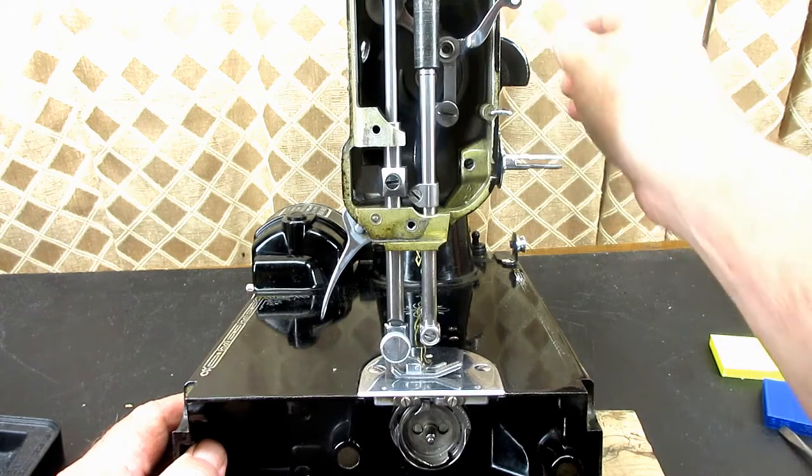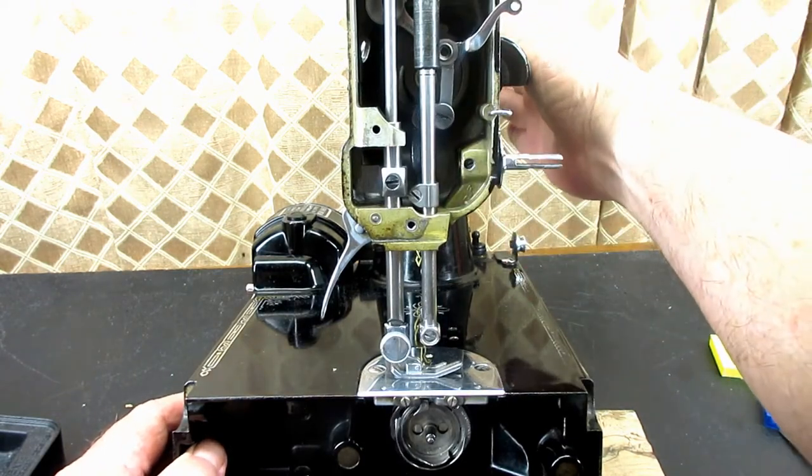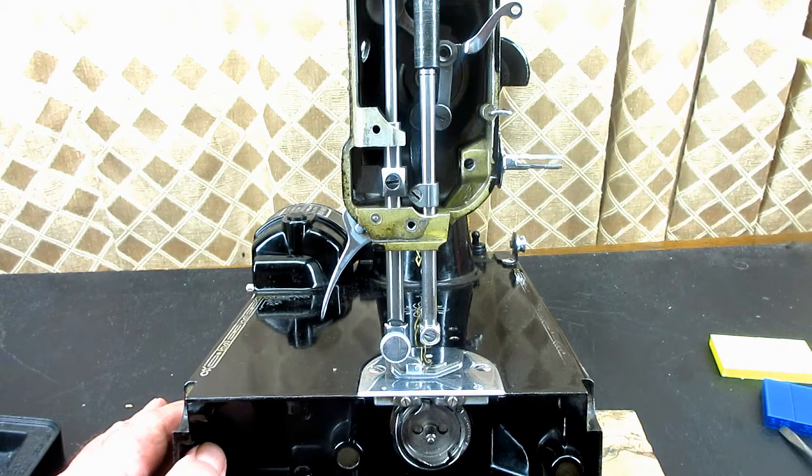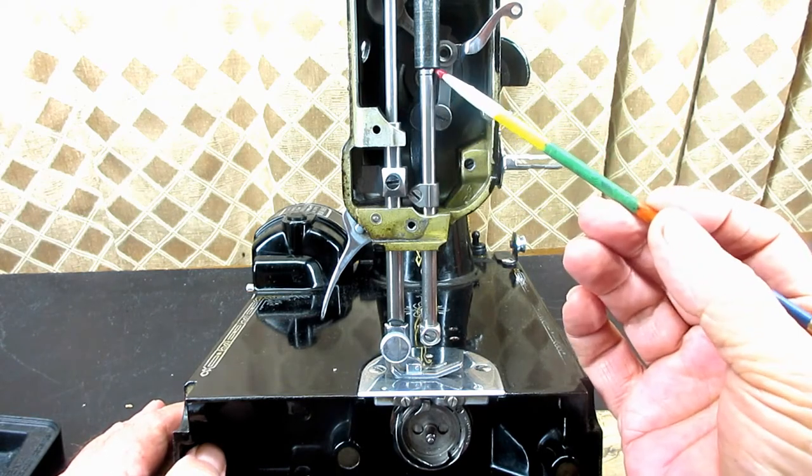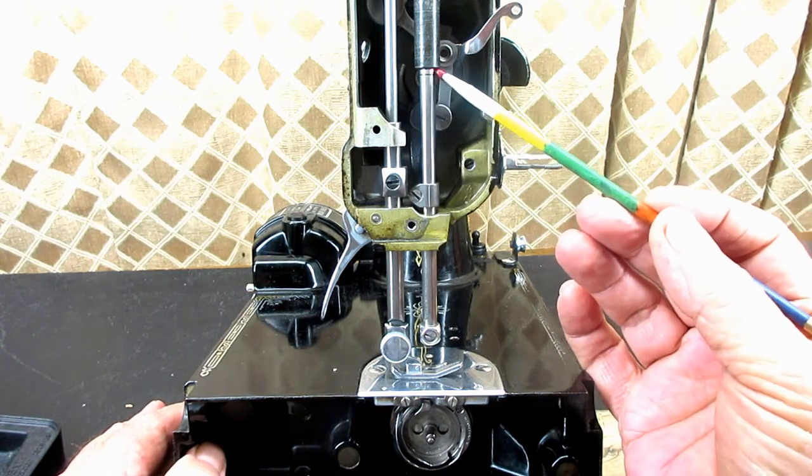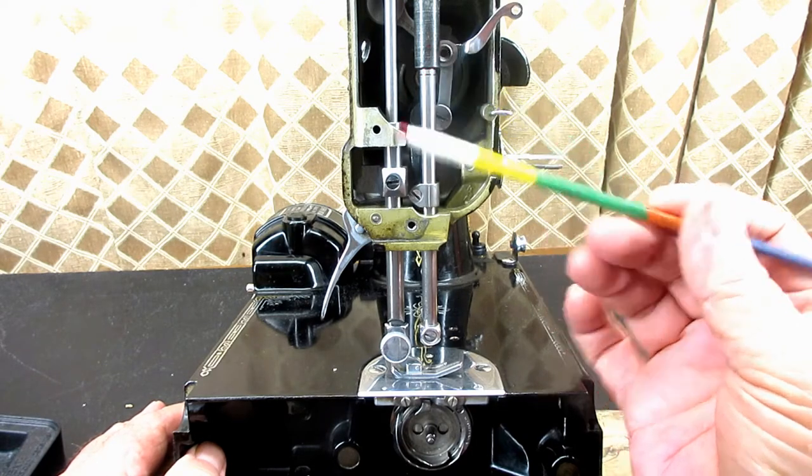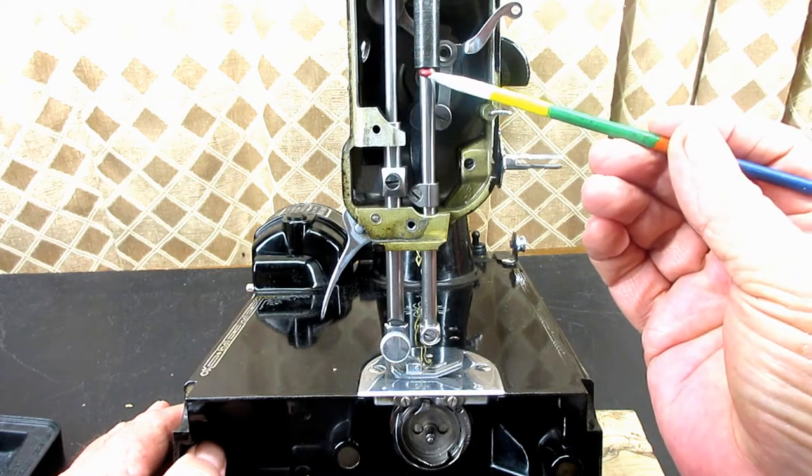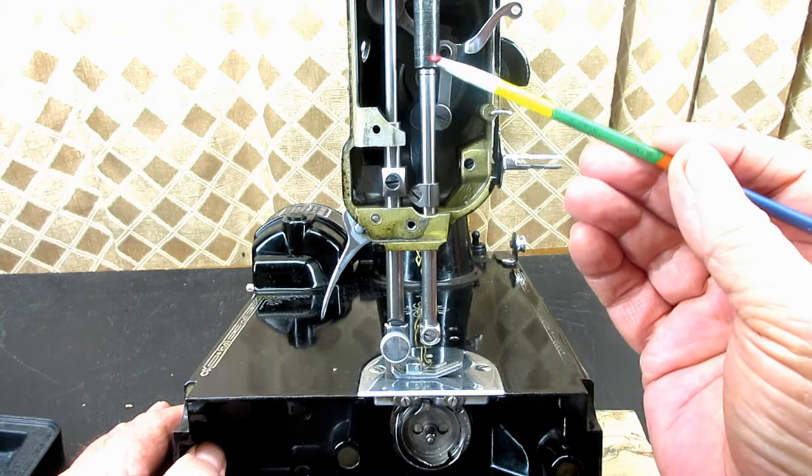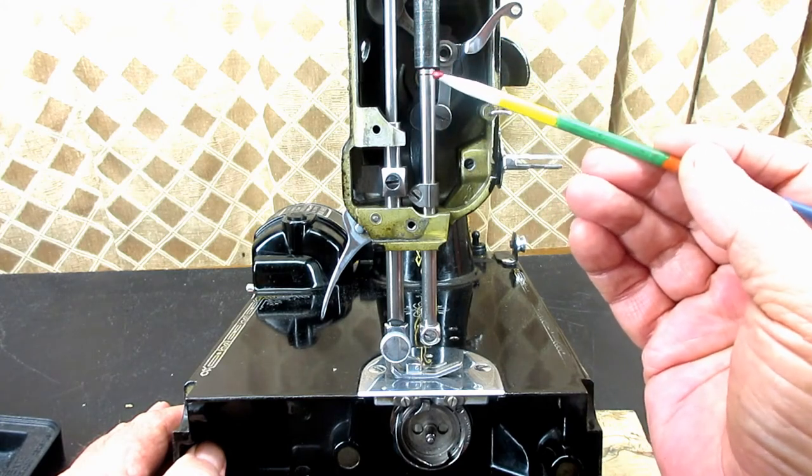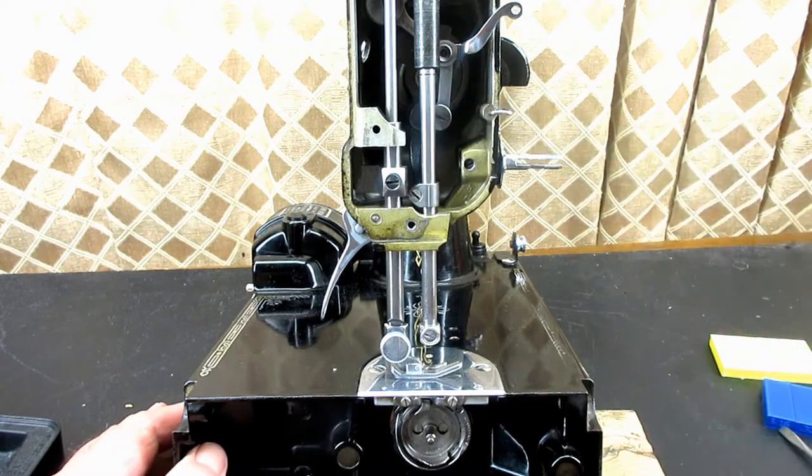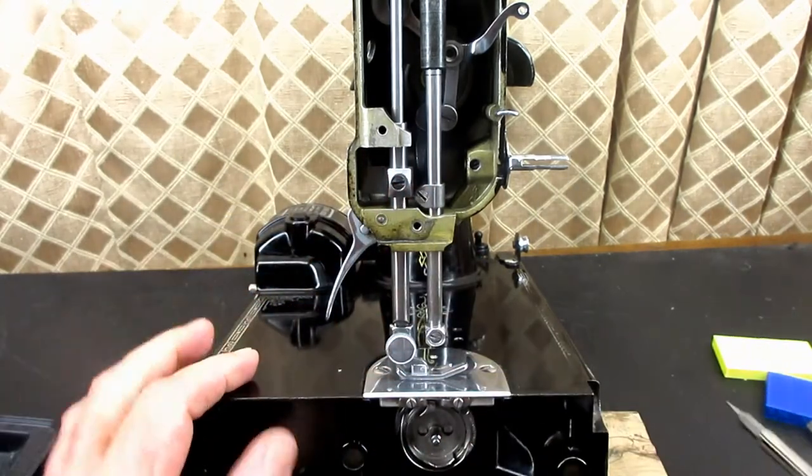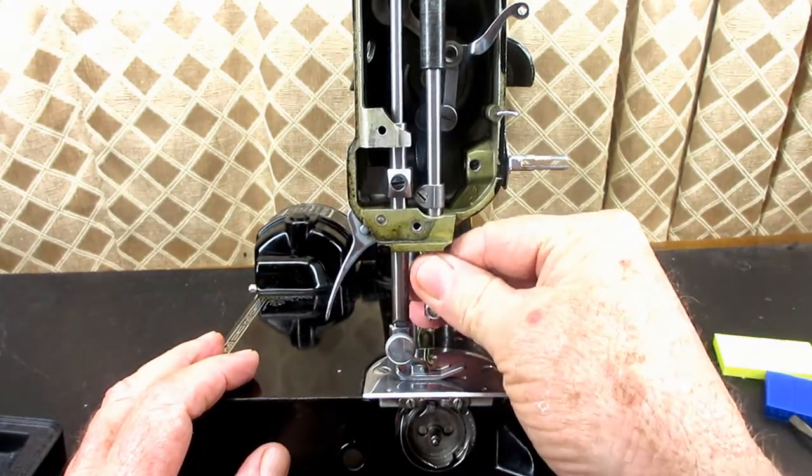Part of setting the height is you lower the needle bar to the lowest point that it can be, and you move the needle bar up or down until this top timing mark is parallel with the bottom of the needle bar bushing. On this model, the timing marks are up at the top of the needle bar, so you would loosen this clamp and manipulate the bar up or down.